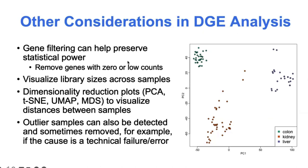Another filtering step we can do is at the sample level. One thing to check first is the library sizes across samples. We can see the variability in library size and how normalization is correcting for that. If there are any samples with very extreme library sizes, we might suspect there was some underlying issue with data quality and we might want to remove that sample. In general, you should consider removing any outlying samples where you suspect technical failure errors that are really going to bias your analysis.